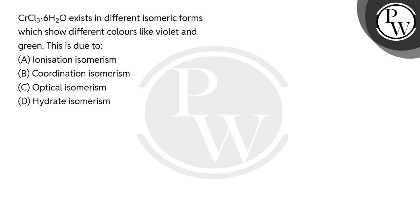Hello students, let's see this question. The question says CrCl₃·6H₂O exists in different isomeric forms which show different colors like violet and green. This is due to four options: ionization isomerism, coordination isomerism, optical isomerism, and hydrate isomerism.